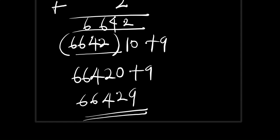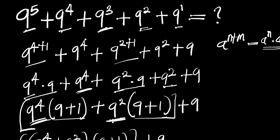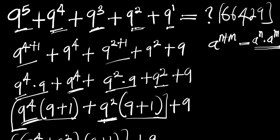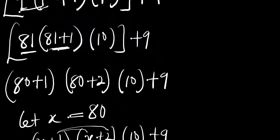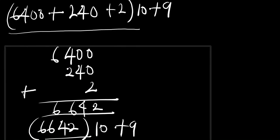So this becomes the final answer. We have been able to evaluate 9 to the power of 5 plus 9 to the power of 4 plus 9 to the power of 3 plus 9 to the power of 2 plus 9 to the power of 1 without making use of a calculator, and the answer is simply 66429. Please don't forget to subscribe to my YouTube channel, drop a comment, and share this video with your friends. Thank you and goodbye.